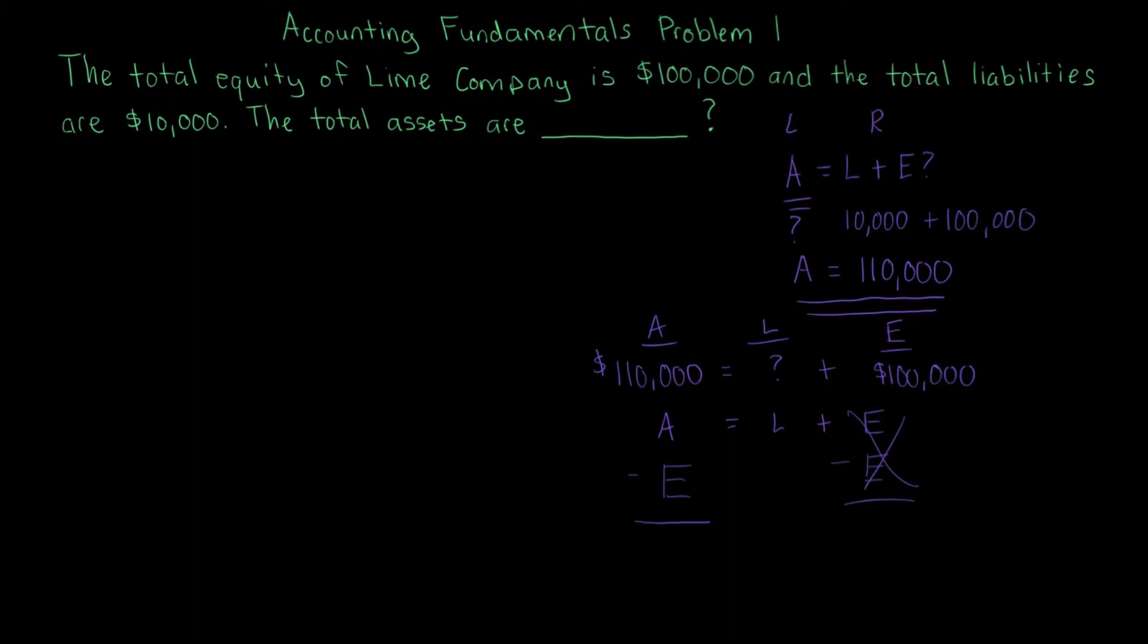I could give you assets are $110,000, liabilities are $10,000, and again using this accounting equation—assets equals liabilities plus equity—you could solve for that unknown, which would be equity, and you'd be able to calculate that the equity would be $100,000. So keep that in mind whenever you're given a question like this. You can play around because the accounting equation is so important in terms of accounting understanding.